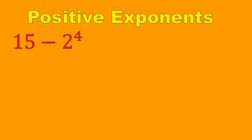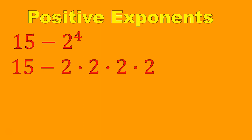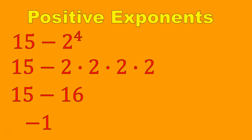Welcome back. Did you get negative 1? Spoiler alert! This is 15 minus 2 to the power of 4. We are going to do 2 to the power of 4 as 2 times 2 times 2 times 2, and solve that first, just like we did in the previous question. 2 to the power of 4 is 16. Now we do the subtraction: 15 minus 16 gives us negative 1.